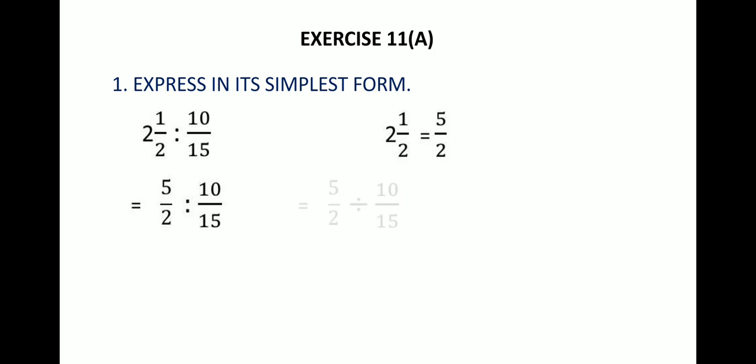So 15 goes up and 10 goes down. Here 5 can cancel 10 two times - 5 ones are 5 and 5 twos are 10, so here we have 1 and 2. Nothing else can be cancelled. 15 × 1 = 15 and 2 × 2 in the denominator = 4. So 15/4 cannot be further simplified; 15:4 remains the answer.